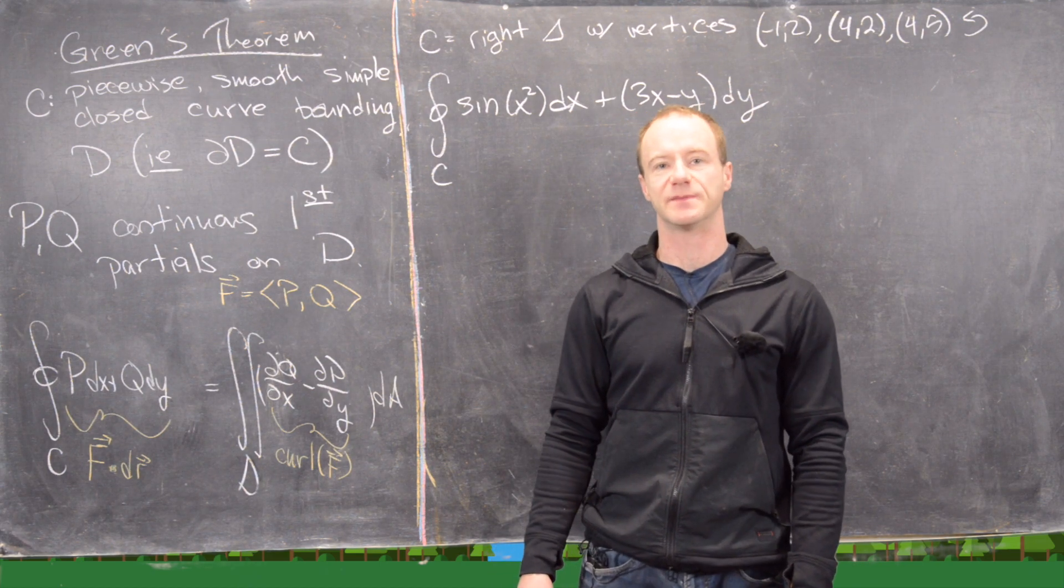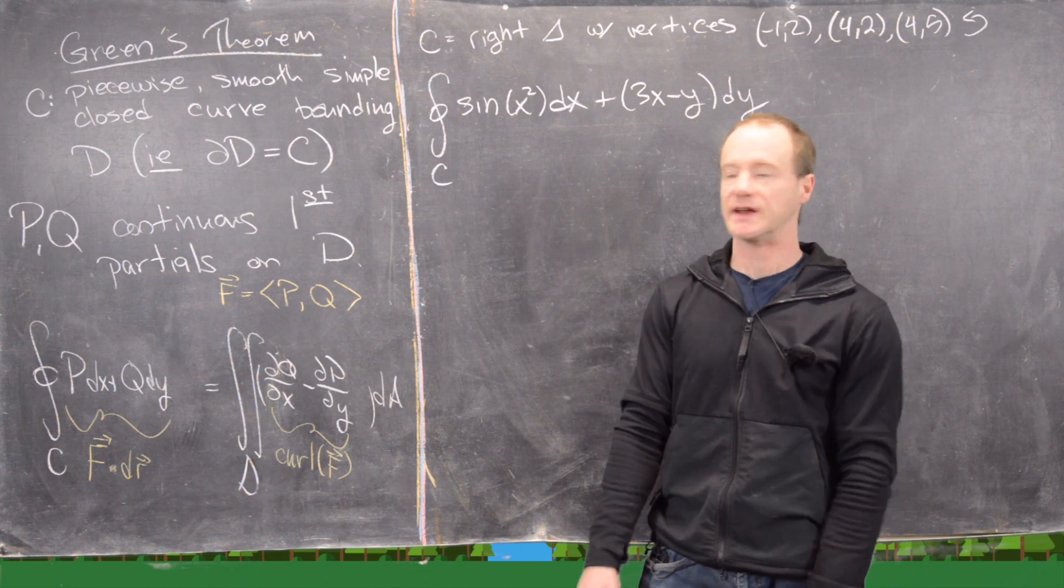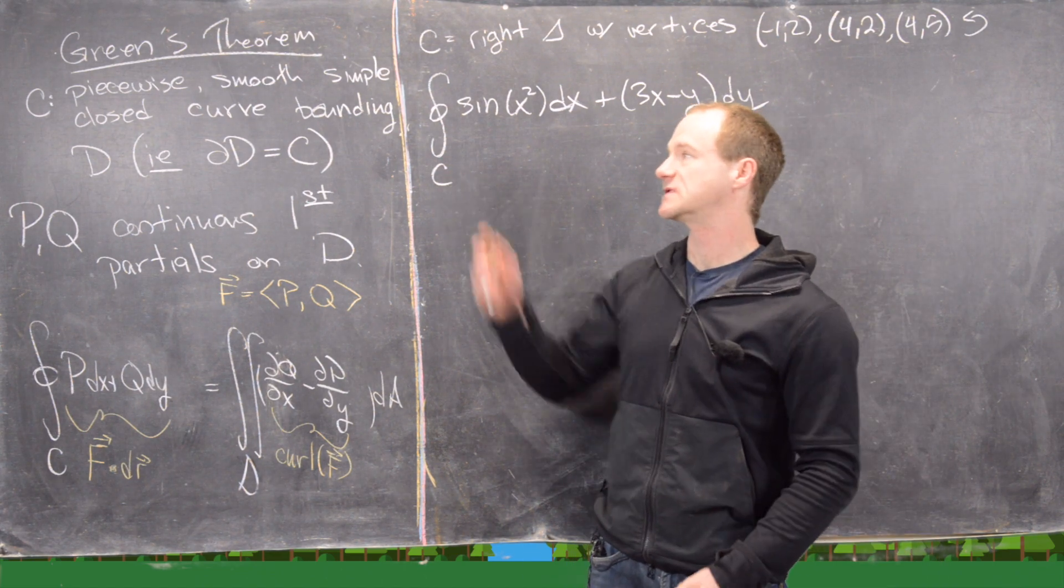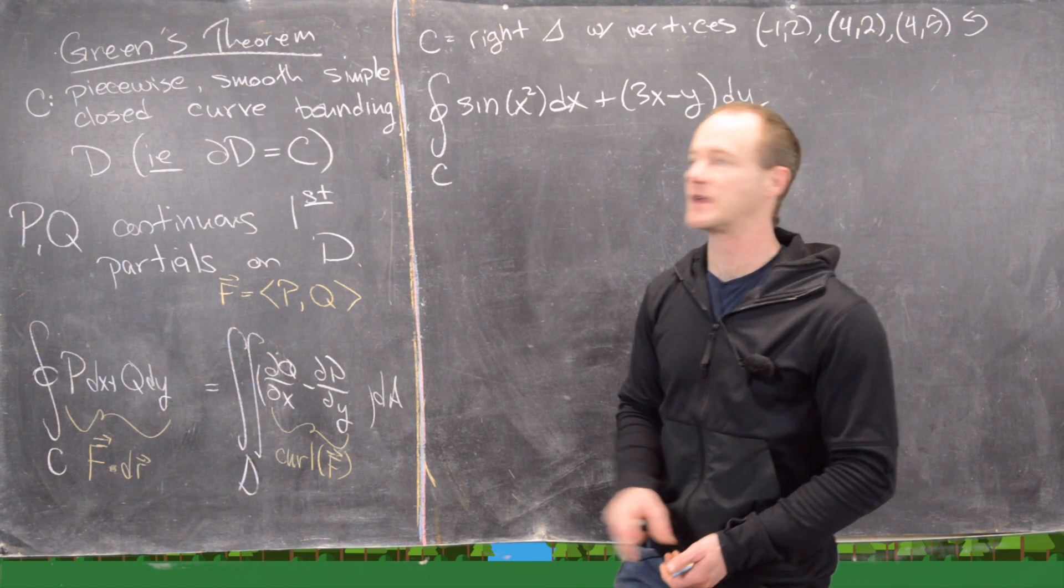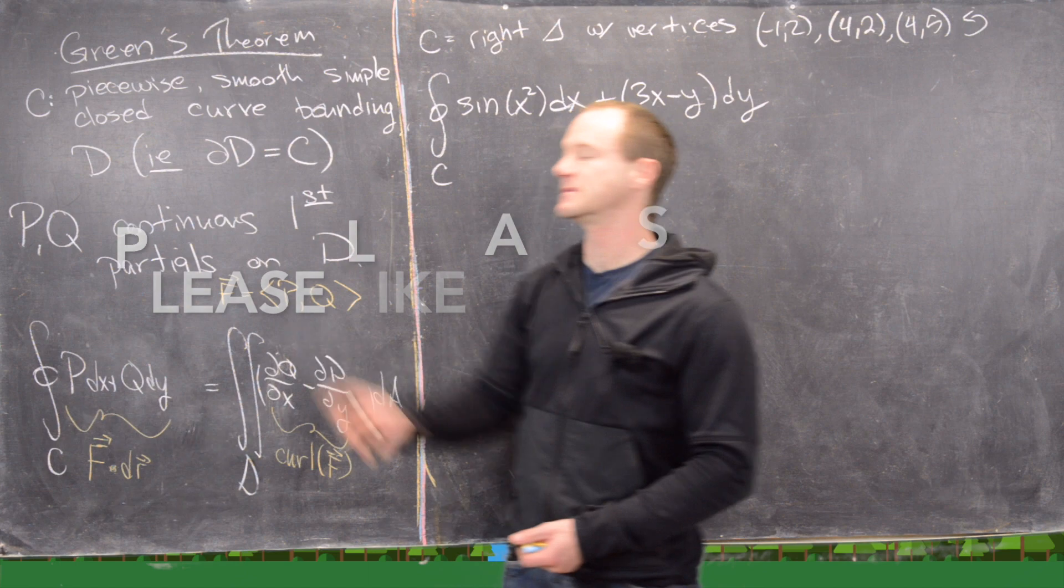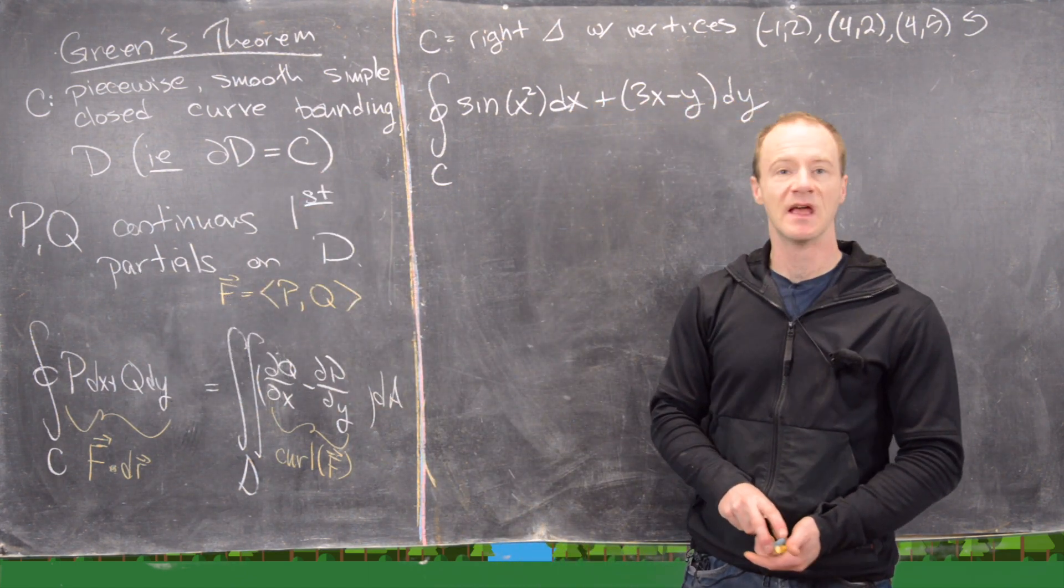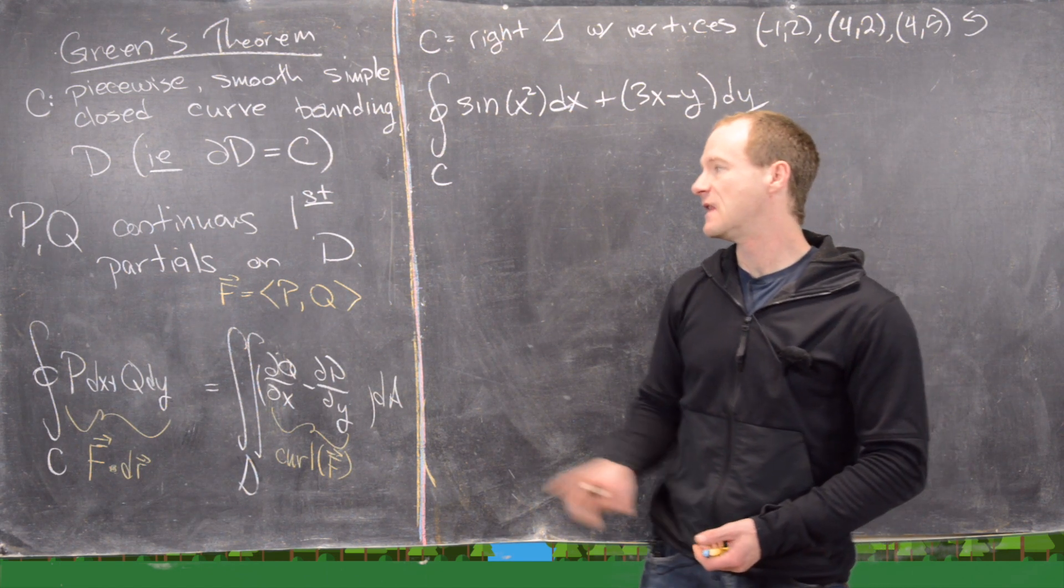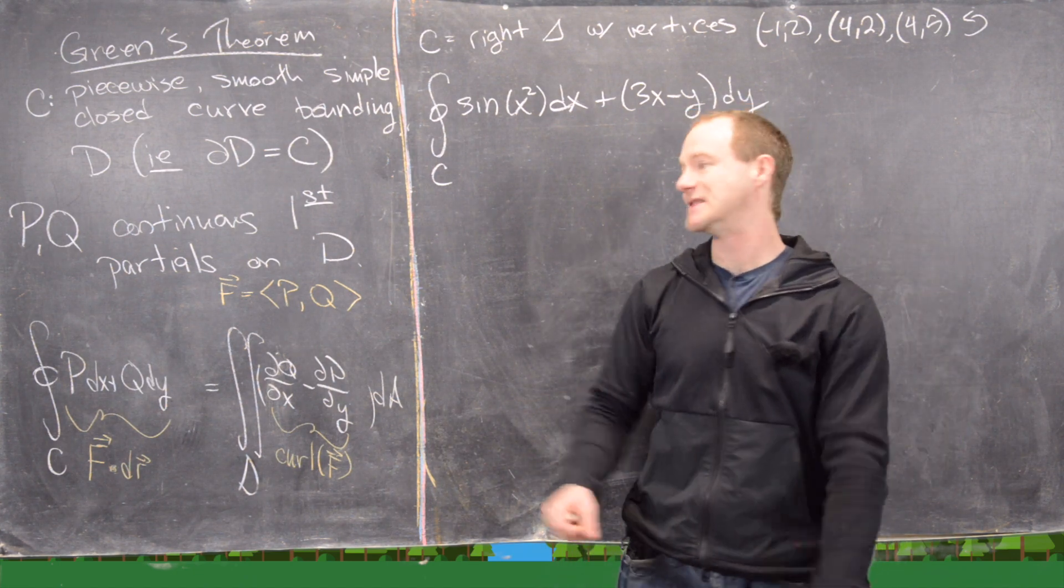Here we're going to look at a couple of examples involving Green's Theorem. So before we get started, let's just recall what it is in general terms. First suppose that C is a piecewise smooth, simple closed curve bounding a region D. Sometimes we say that the boundary of D is equal to C, written as ∂D = C. And then P and Q are two functions of two variables that have continuous first partials on an open set containing D.